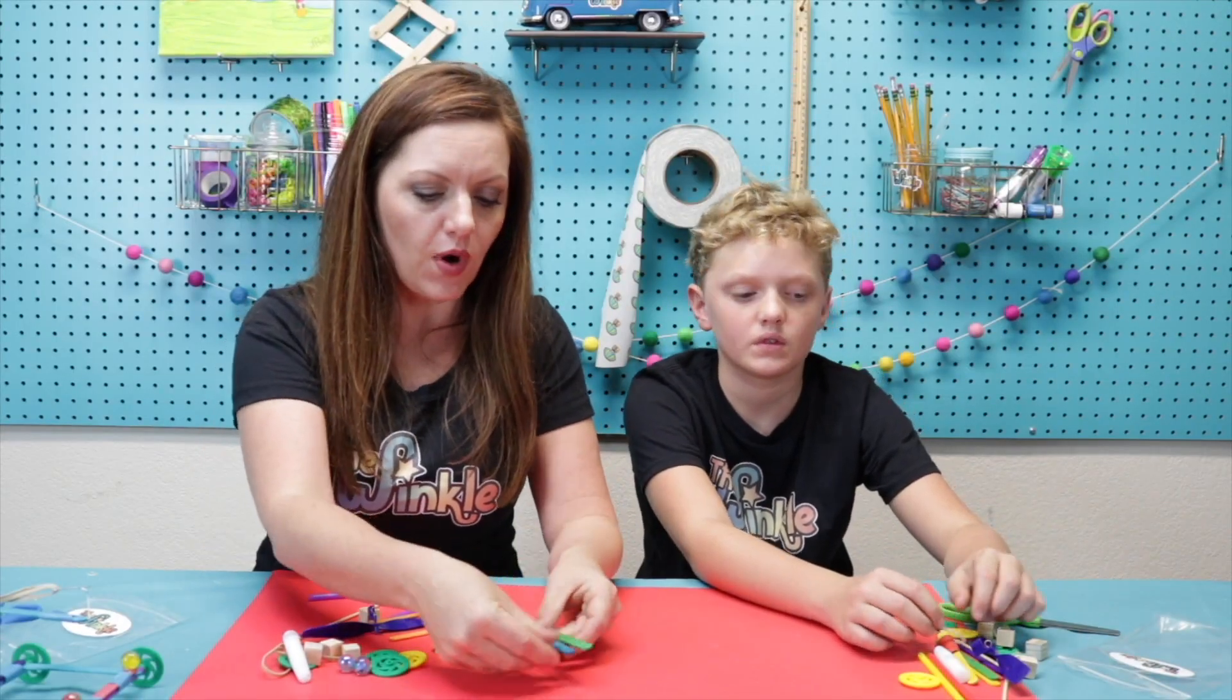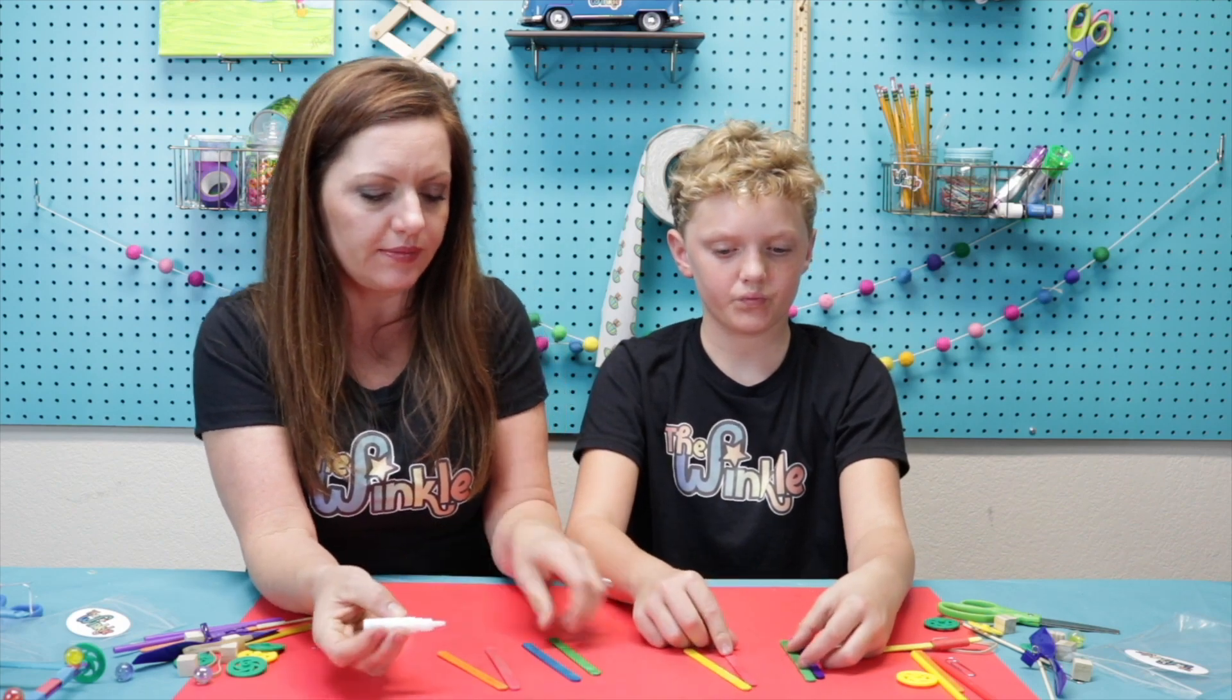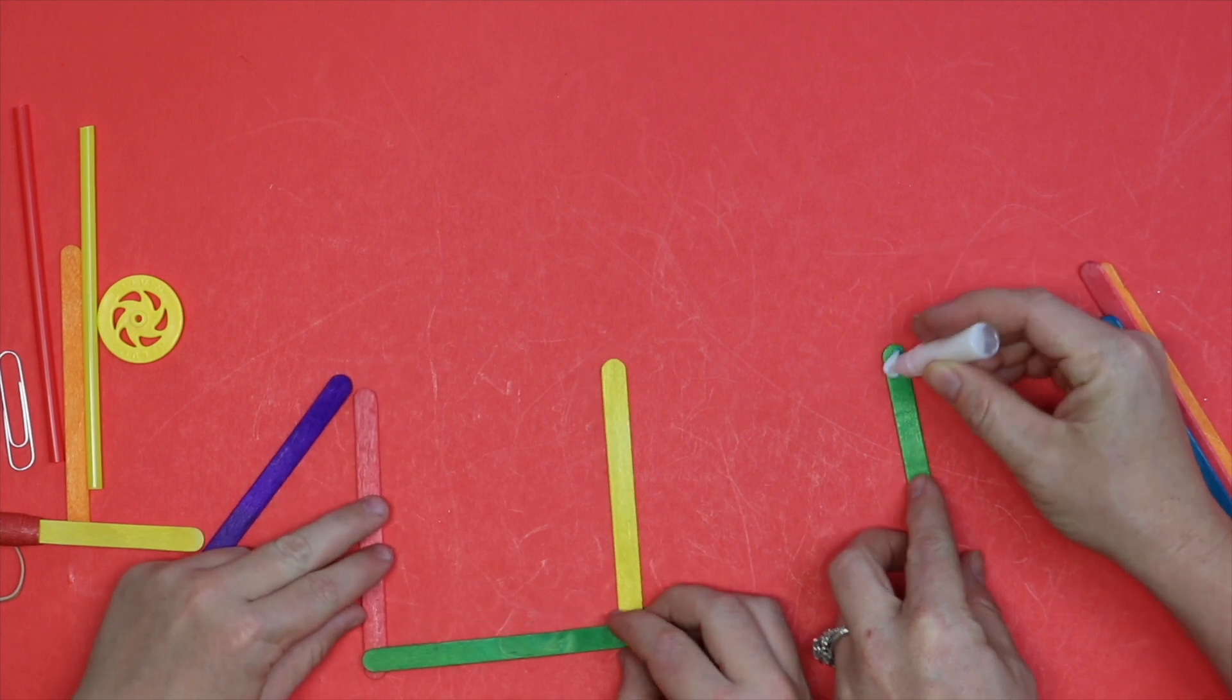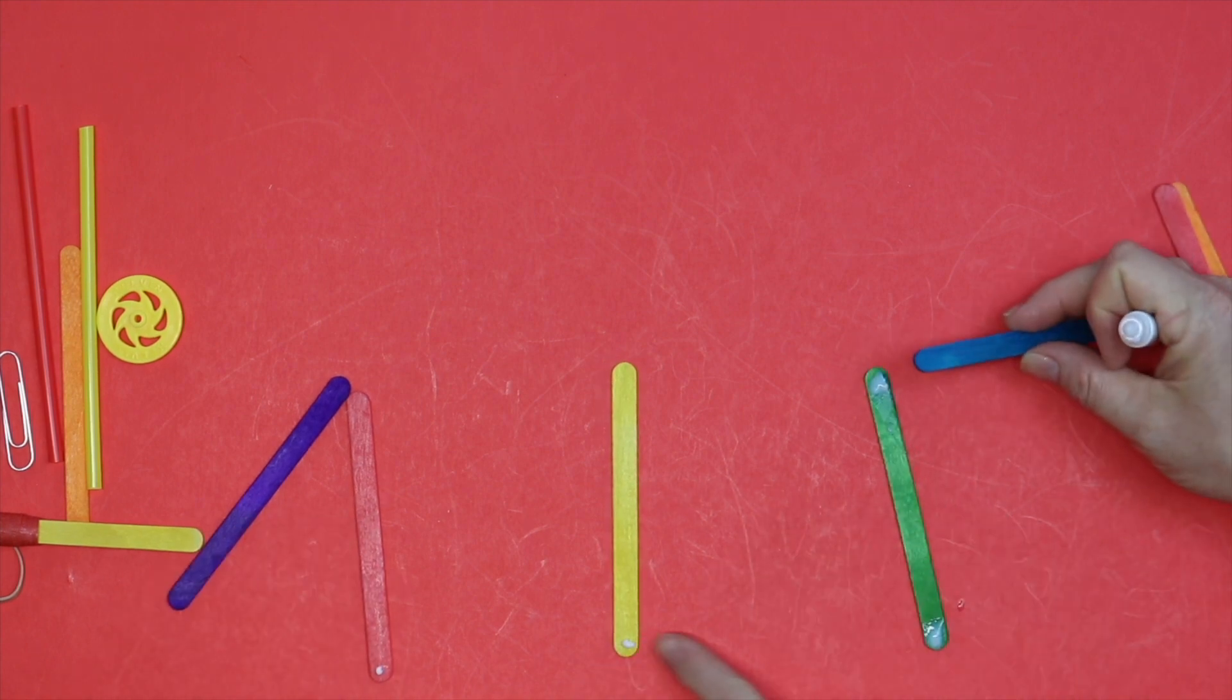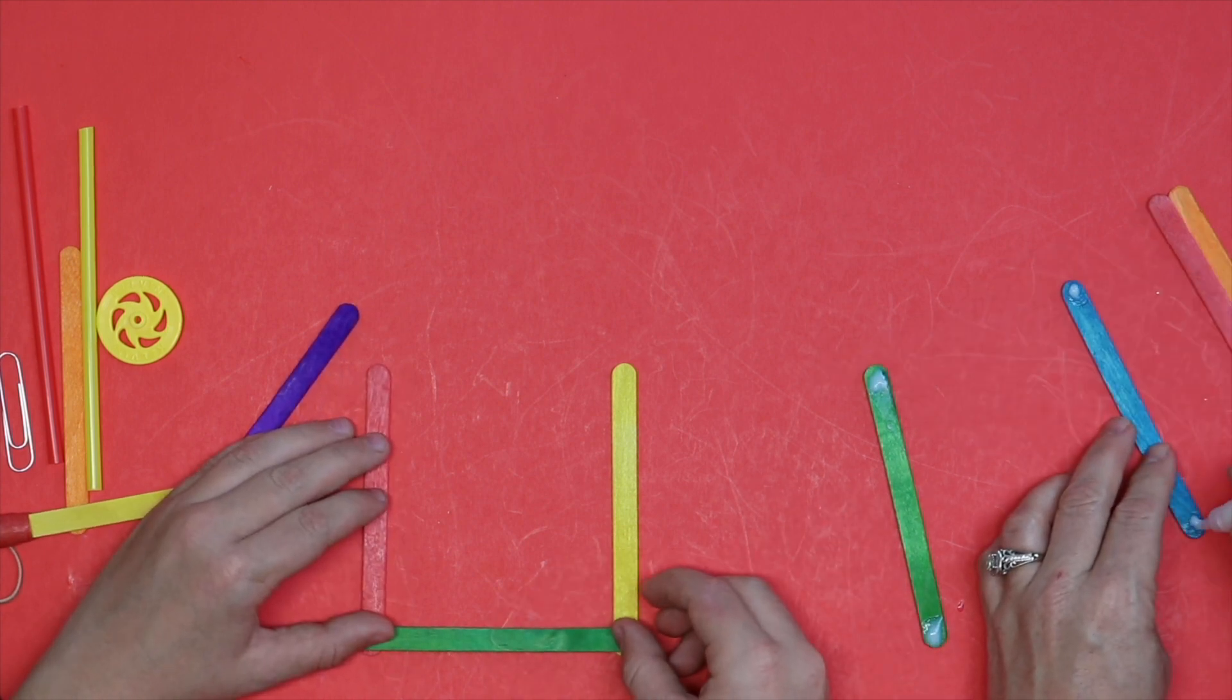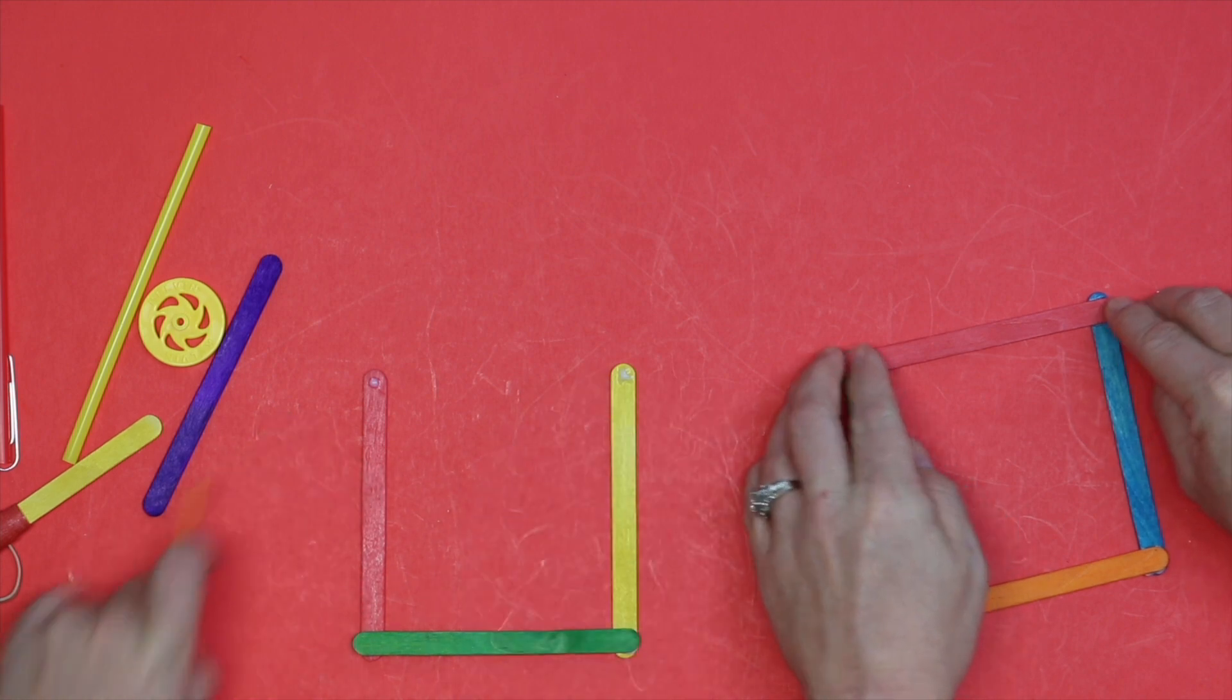First, you're going to get out four popsicle sticks and your glue. You can keep everything else in your bag for right now. That way you don't lose it or lose track of it. We're going to build a perfect square. So one popsicle stick should have glue on each side. Not a lot. And when you're doing your glue, you don't want a whole lot. Grant did it perfect. You just want a little dot. If you do too much, it takes forever for it to dry. Try and make that square as even as possible. So when you're making a square, these are called right angles right here.